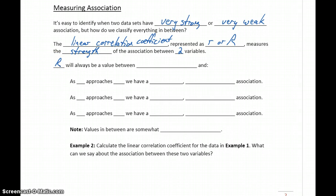So our value for r, that linear correlation coefficient, is always going to be a number between negative 1 and 1. And we can interpret it based off whether it's closer to negative 1, closer to 1, or closer to 0.